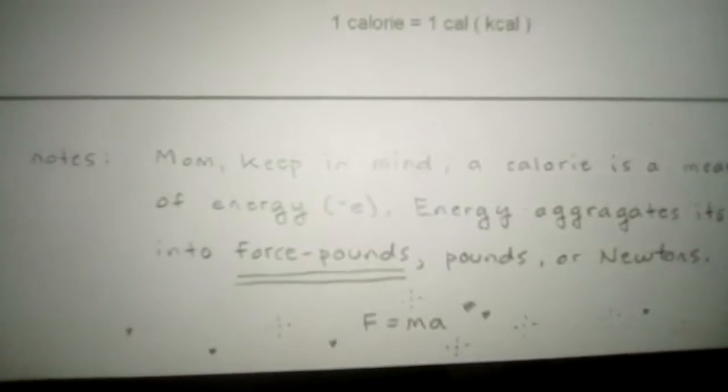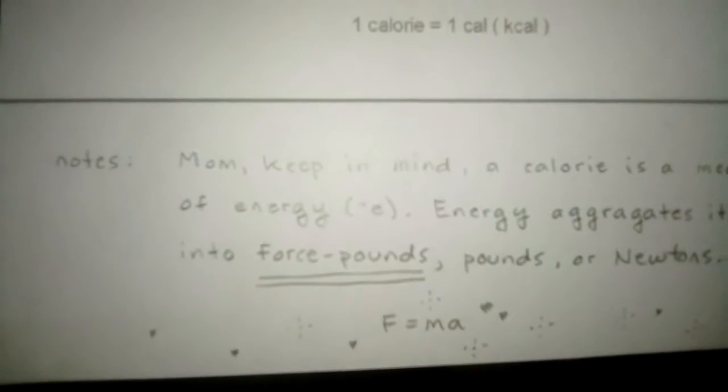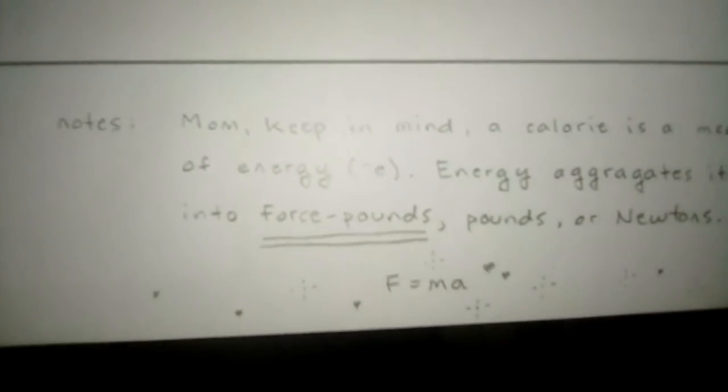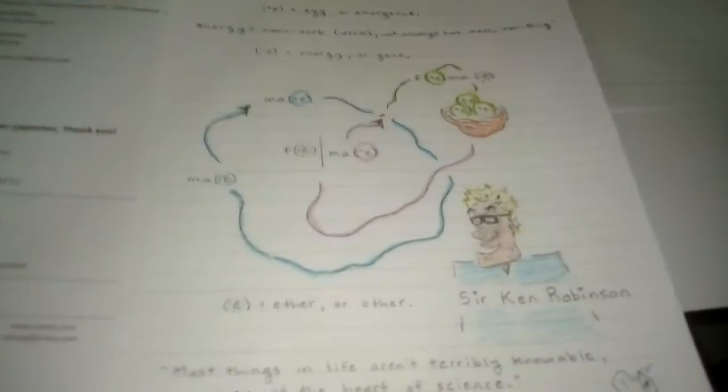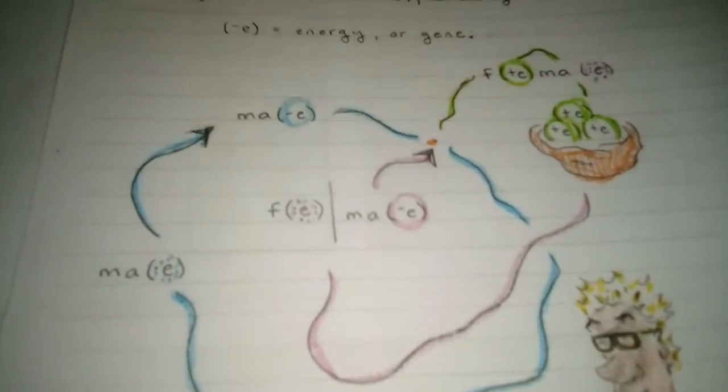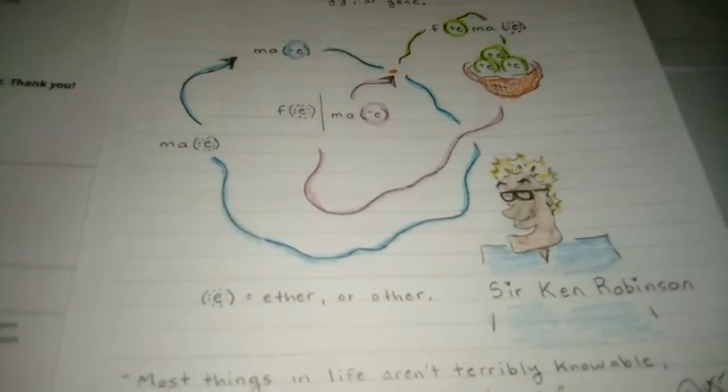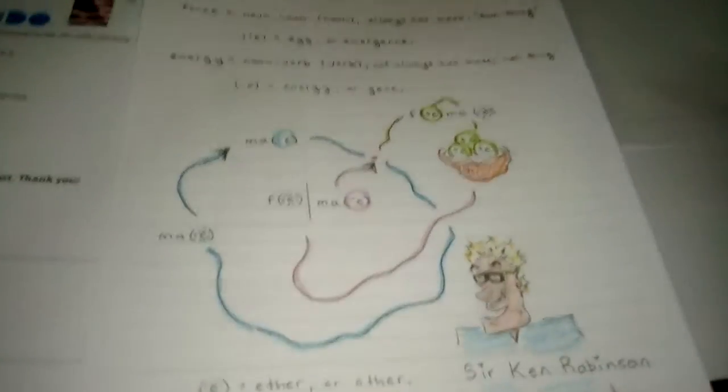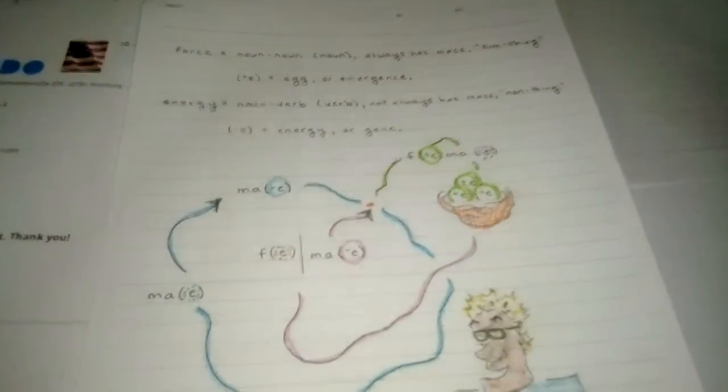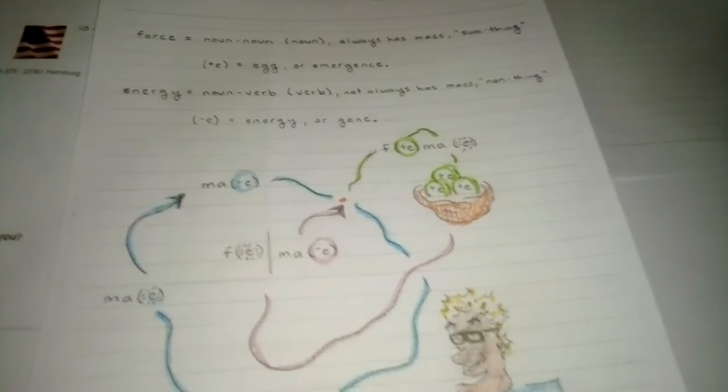So this is like, to my mom, I was like, mom, keep in mind a calorie is a measure of energy. Energy aggregates itself into force, pounds or newtons or just pounds. Force equals ma. You eat energy, you gain pounds. Pounds is a force and energy is not a force. How does that work? How does energy become force? How come you're never taught that in school, or how come it's not on the internet, or how come you'll never learn this anywhere in the entire world unless you're a top secret government scientist, or you get it from Top Wiki?